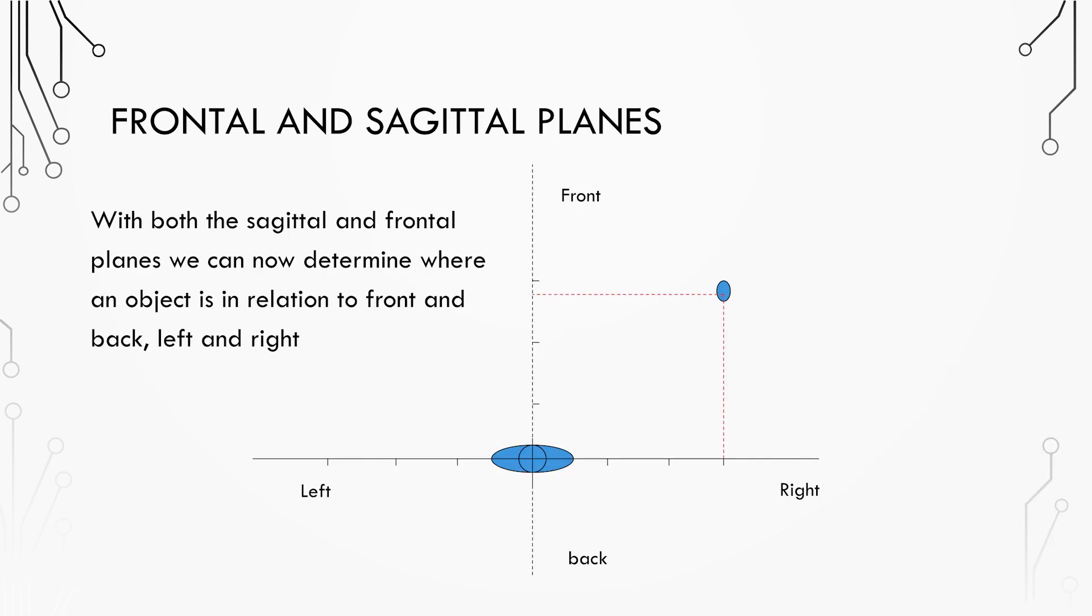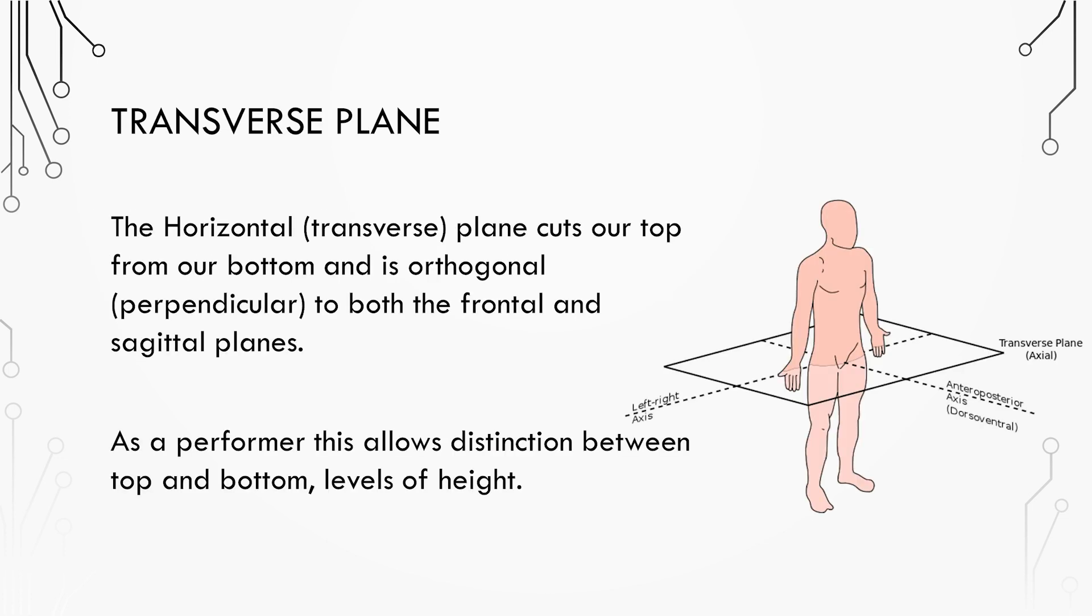When you put these two planes together, we now have a two-dimensional axis system. Using both planes, we can now determine where an object is in relation to front and back, left and right. Looking down on top of this, we can see the third plane.